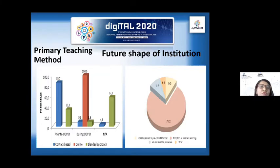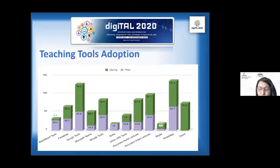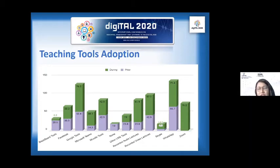Looking at the teaching tools commonly adopted by academics: prior to the pandemic, 67% used WhatsApp, Google was 52%, and Moodle was 42%. During COVID-19, Zoom and Google topped the list with 76% each. Zoom was basically invisible prior to COVID, but with COVID it really rose to the top in the context of education.